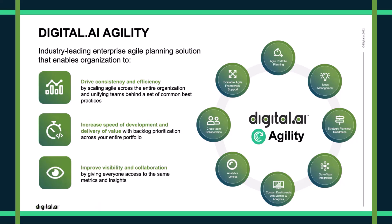As you can see on the right-hand side of this graphic, there are many components within the Agility platform — from agile portfolio planning through strategic planning and roadmaps, custom dashboards with metrics and analytics, cross-team collaboration, and support for scaled agile frameworks such as SAFe.